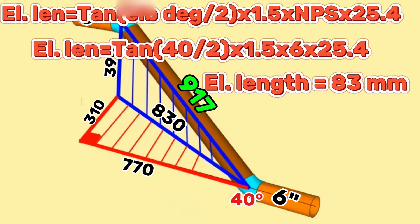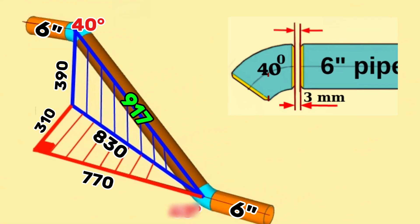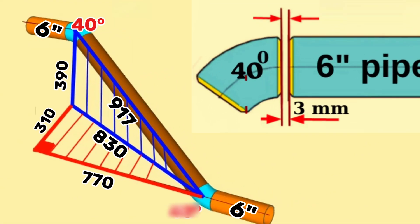Now look at the fit-up process of pipe fittings in this pipeline. During fit-up, there is an open gap between the pipe fittings to be welded, approximately 3 to 4 millimeters. Having this gap is for better root welding. We should take these gaps into account when calculating the length of the brown color pipe section.